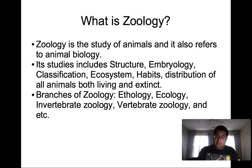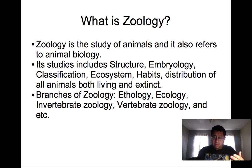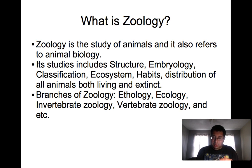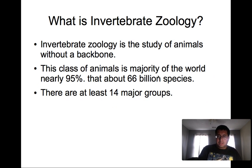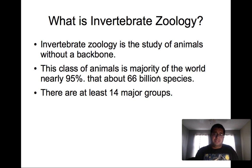There are branches of zoology that deal with certain specific types of animals. We have scientists who study insects, scientists who study fish, and scientists who study various species. Invertebrate zoology is the study of animals without a backbone, or without bones in general.